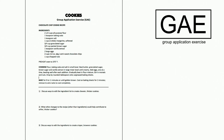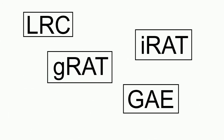So those are all the steps of TBL: learner-responsible content done at home, the individual readiness assessment test, the group readiness assessment test, and then the group application exercise - with the GAE being the most important part. That's when learners really apply knowledge. This is why we do the flipped classroom, so people come to class and apply concepts rather than just memorizing things.